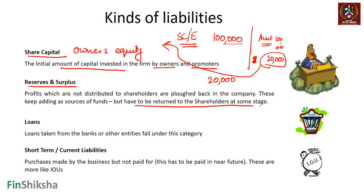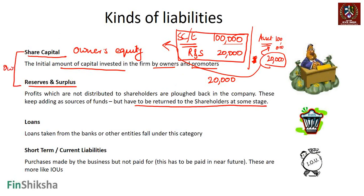The 20,000 rupees profit belongs to the equity owners. If not paid out, it's retained in the company and used to buy more assets - this is called reserves and surplus. It will have to be returned to the shareholder eventually. Together, share capital plus reserves and surplus is what is called owners' equity. Remember: the owner and the business are different entities. Ownership can change hands, so this is a liability - the business must return it to the owner.